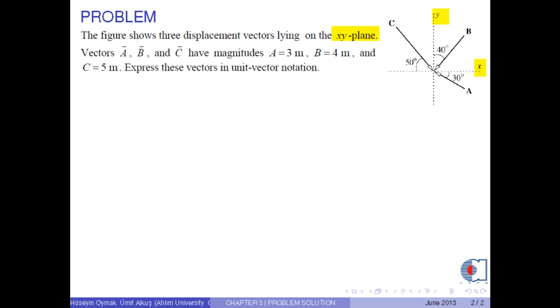The figure shows three displacement vectors lying on the xy-plane. Vectors a, b, and c have magnitudes a equals 3 meters, b equals 4 meters, and c equals 5 meters. Express these vectors in unit vector notation.